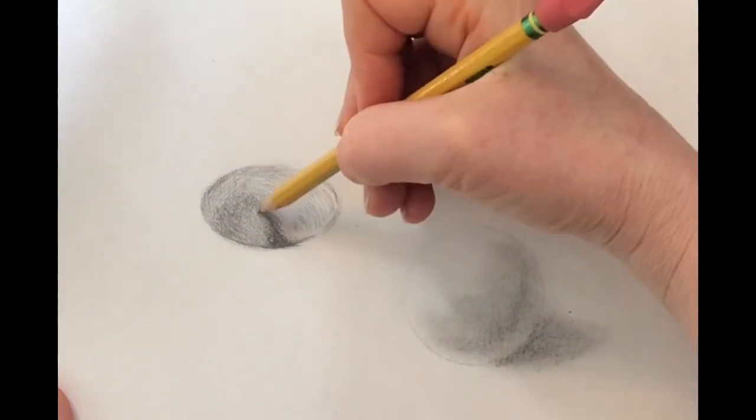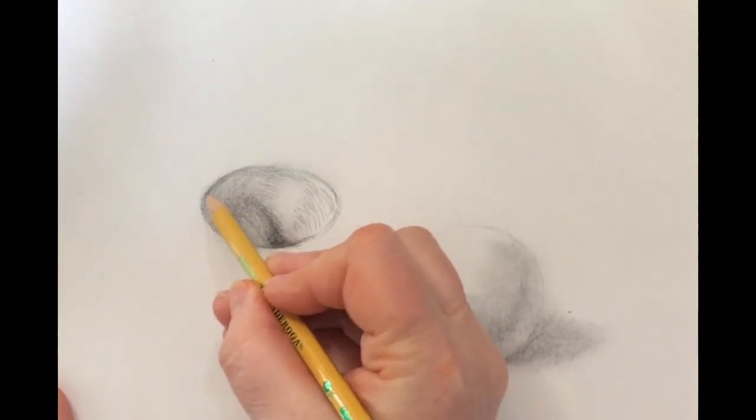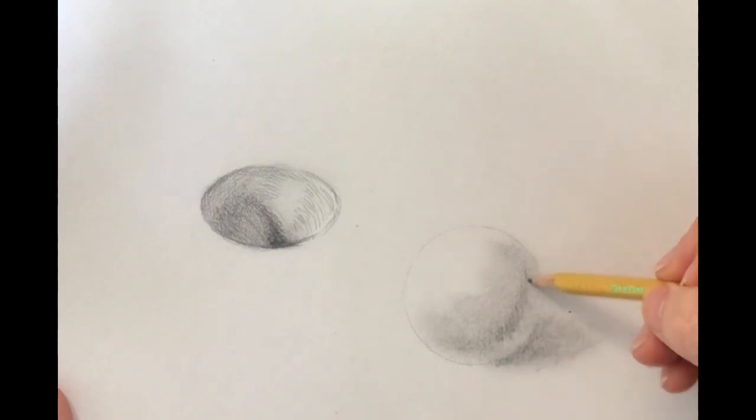But again, if you have blending stumps and you have the gum eraser and the other types of graphite pencils, go for it. It will make a lot more of a finesse for you and your artwork.